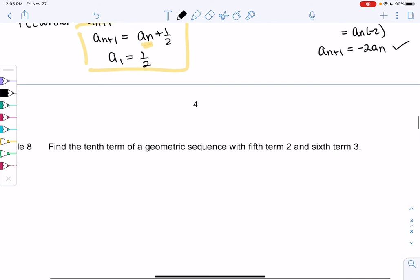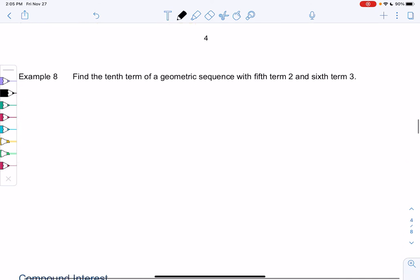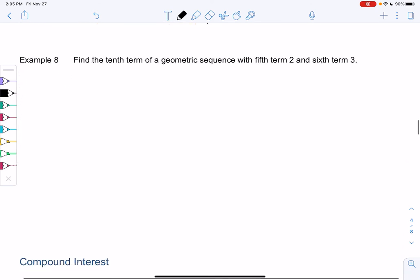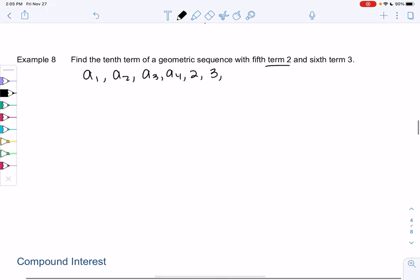Let's try another one. We want to find the tenth term of a geometric sequence where the fifth term is 2 and the sixth term is 3. We're missing some terms—we don't know the first four terms, but we know the fifth term is 2 and the sixth term is 3. We want to somehow find 7, 8, 9, and then find that tenth term. There's two ways to do this; I'll show you both.